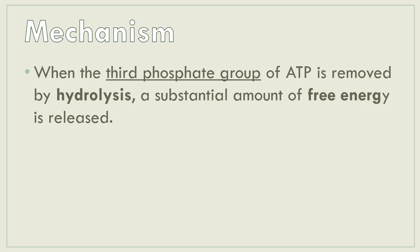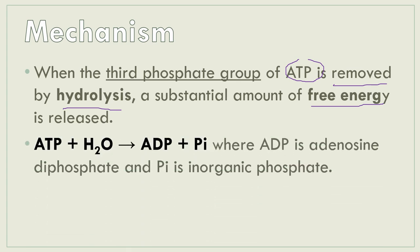Let's go through the mechanism. When the third phosphate group of ATP is removed by hydrolysis — the process we use for ATP — a substantial amount of free energy is released. The reaction is: ATP plus water yields ADP and phosphate as products. Once you hydrolyze ATP, it forms ADP and phosphate. What happened? There was a release of energy, and that energy goes toward the work of our cell. ATP is high energy, while ADP is low energy, due to the chemical bonds we mentioned that store energy.